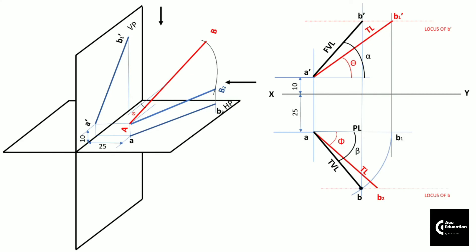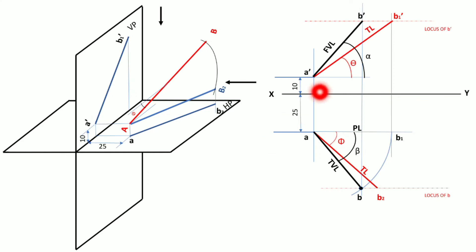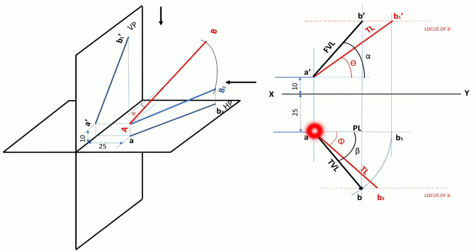We can project any line which is inclined to both the planes using this method. For the notations used in projection of lines: point A' is the front view of point A, and point A is the top view of point A. When we draw line A'B', that is the front view line, and when we draw line AB, that is the top view line — these are the actual projections of line AB. The true length in front view has notation A'B1' and makes angle theta with the XY line. The true length in top view is line AB2 and makes angle phi with the XY line.